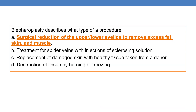Next question: blepharoplasty describes what type of procedure? 'Blepharo' means eyelid and 'plasty' means surgical repair. Blepharoplasty is a surgical reduction of the upper or lower eyelids to remove excess fat, skin, and muscle. Option A is the correct answer.